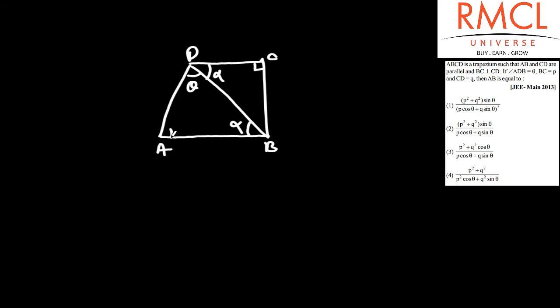It is given that BC is B and CD is Q. So we can say that the value of DB will be root of B squared plus Q squared. So BD equals root of B squared plus Q squared.